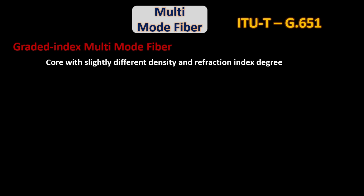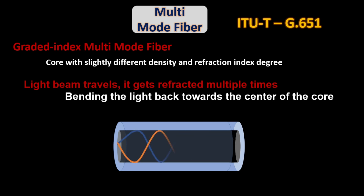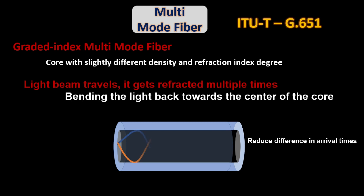With graded index fiber, manufacturers create a fiber core consisting of material of different densities and refractive indices that gradually decrease from the center of the core outward toward the cladding. Due to the symmetrical waves of light, the dispersion delay is not very long and its value varies in a small common range.